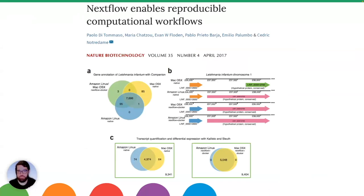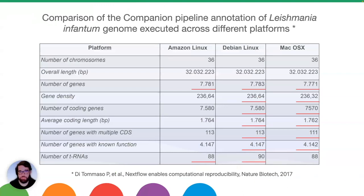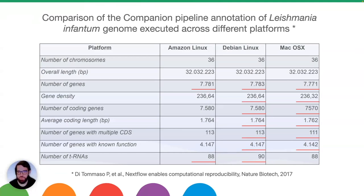People realized that even with rudimentary orchestration tools, reproducing results was difficult. The same pipeline run on Amazon Linux, WLinux, and macOS produced different results — just by changing the operating system. This is the type of challenge Nextflow was trying to tackle: scientific reproducibility. It's not just about repeatability — running the same steps — but reproducibility: getting the same results regardless of where you run it.